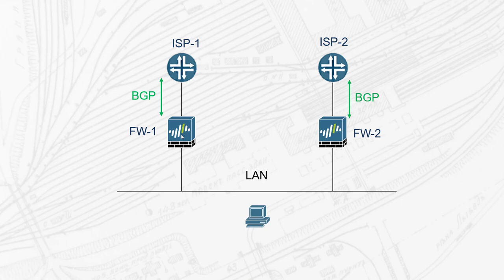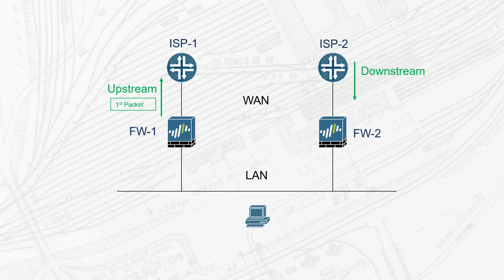When dealing with BGP and different internet providers, customers usually want to take advantage of the two links and be fully in control of upstream and downstream traffic, like in this picture. The problem is that firewalls are usually very bad candidates for such a design.